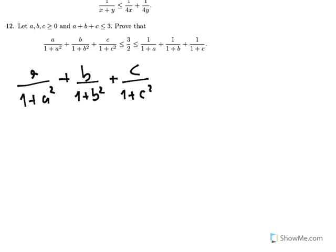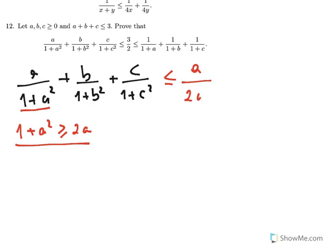I know that 1 plus A² is greater than or equal to 2A by the AM-GM inequality. Or you can see that transposing 2A to the other side gives (A minus 1)², which is definitely non-negative. So I can replace 1 plus A² with 2A. Since the denominator decreases, the value of the fraction increases, giving A over 2A.